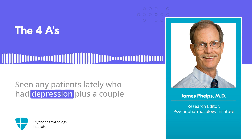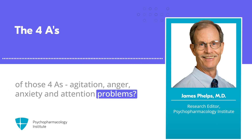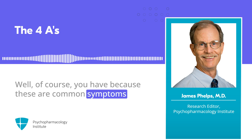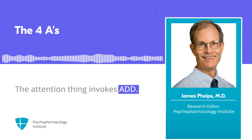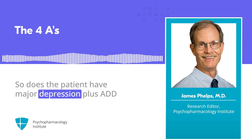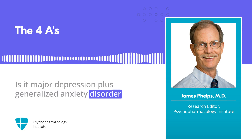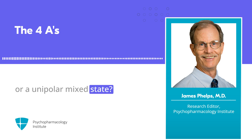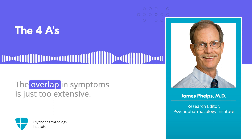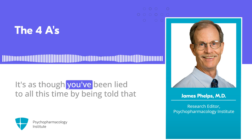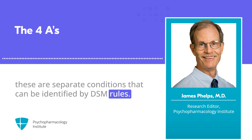Seen any patients lately who had depression plus a couple of those four A's — agitation, anger, anxiety, and attention problems? Of course you have, because these are common symptoms of generalized anxiety disorder and PTSD and borderline personality disorder. The attention thing invokes ADD. So, does the patient have major depression plus ADD or a unipolar mixed state? Is it major depression plus generalized anxiety disorder or a unipolar mixed state? How are you supposed to tell these apart? I submit to you that it's basically impossible. The overlap in symptoms is just too extensive. It's as though you've been lied to all this time by being told that these are separate conditions that can be identified by DSM rules. That's just false.